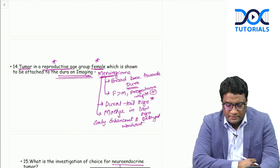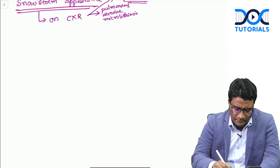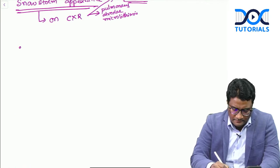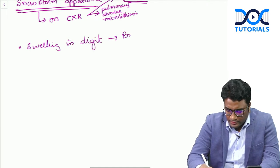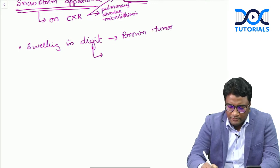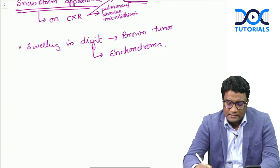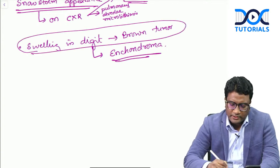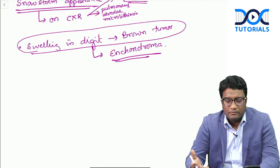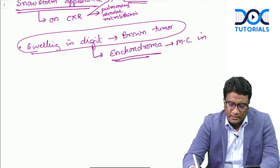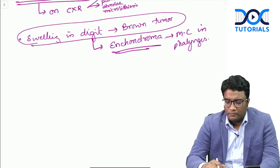There was a question on swelling in the hypothenar muscles or digits in the context of hyperparathyroidism - that was a brown tumor. However, if Enchondroma was given as an option, the answer would be Enchondroma. The most common tumor in the phalanges is Enchondroma. If the image showed a tumor in the digits with Enchondroma as an option, that is the correct answer.